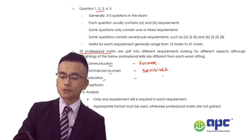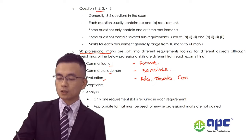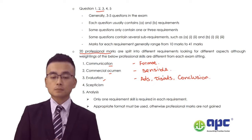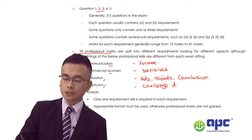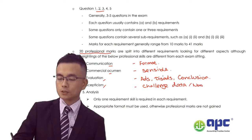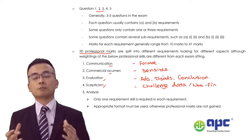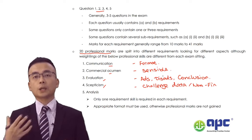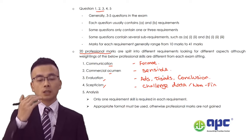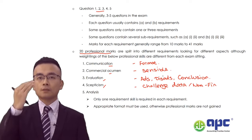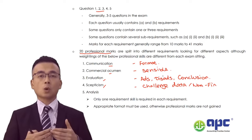Evaluation skills mean you need to discuss advantages, disadvantages, and show your conclusion. Scepticism means you're going to challenge the data given by the examiner. For example, in an NPV calculation, if the tax rate is not given, although we compute the free cash flows, this may not be correct because information is missing — and by pointing that out, you demonstrate your professional scepticism.